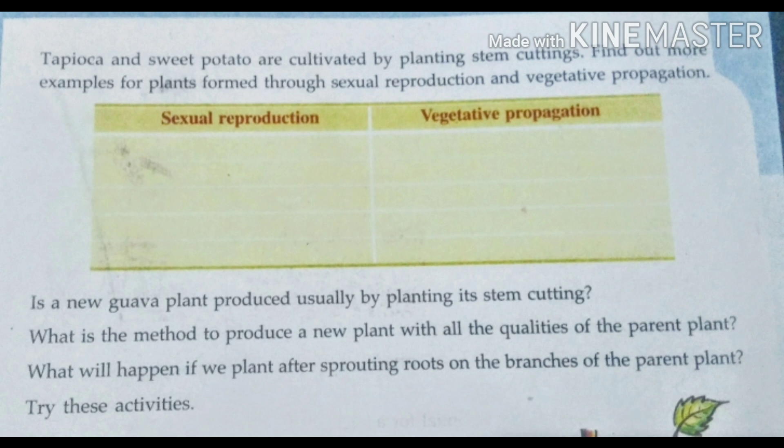For vegetative propagation, we can use root, stem, and leaf. For root: nandiyawattam, curry leaves, etc. For stem: tapioca, hibiscus, rose, etc. For propagation with leaf: flowering plants like begonia. These are the examples for vegetative propagation.